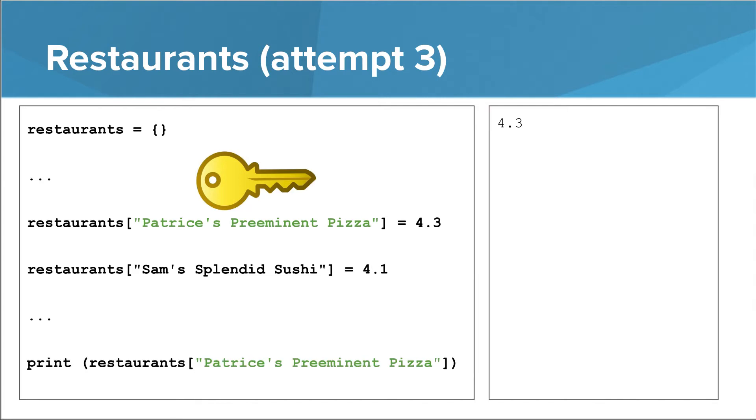We can retrieve the value for a certain key the same way we retrieve the thing at a particular index in a list. We put the key in square brackets. Note that unlike lists, there isn't really a notion of appending to a dictionary the way there is with a list. You just set the value of a particular key using square brackets.